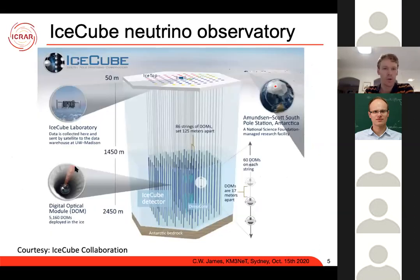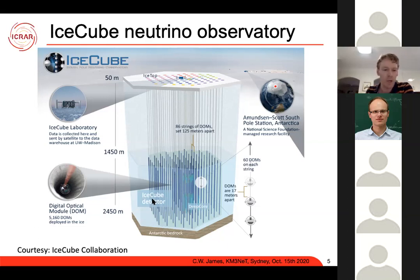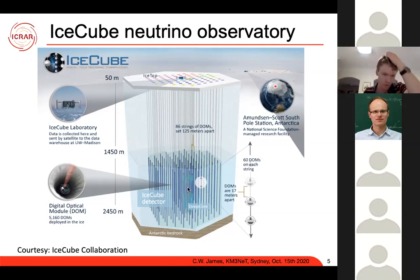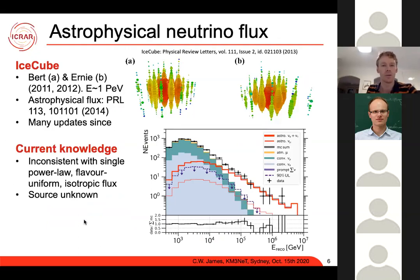The currently largest neutrino observatory in the world is IceCube, located at the South Pole at Amundsen–Scott South Pole Station. As its name suggests, it's a kilometre-cubed of ice buried at a depth of between about 1.5 and 2.5 kilometres, consisting of a total of about 5,000 optical modules buried down holes that are filled with water and refrozen — so you're not getting them back out again. IceCube has been looking for neutrinos for about the last ten years and has discovered an astrophysical flux of neutrinos.